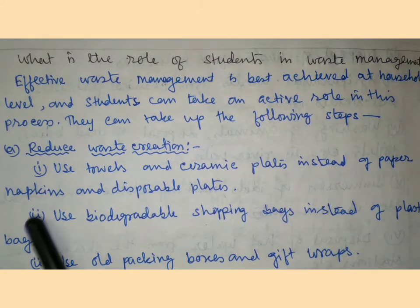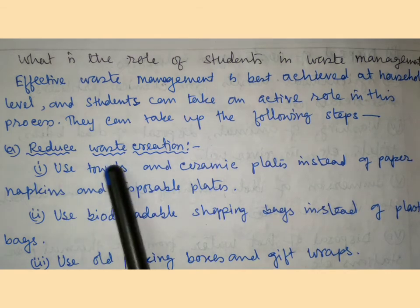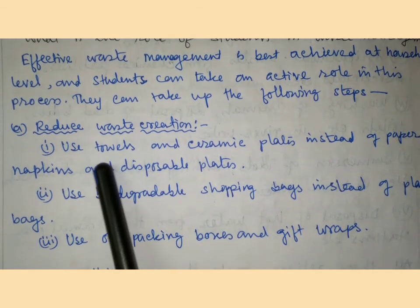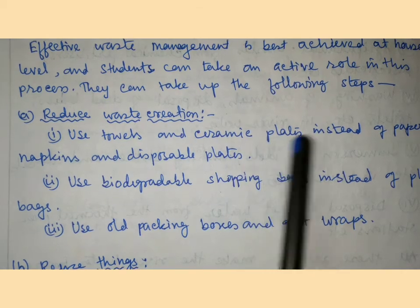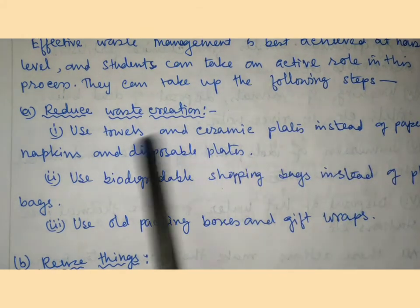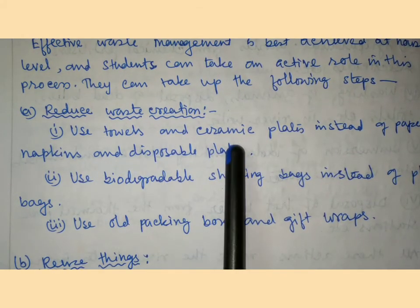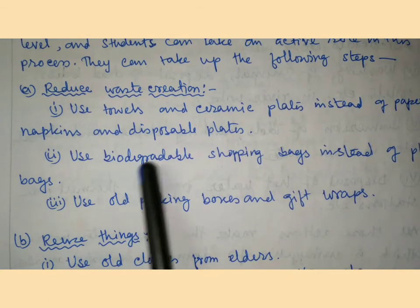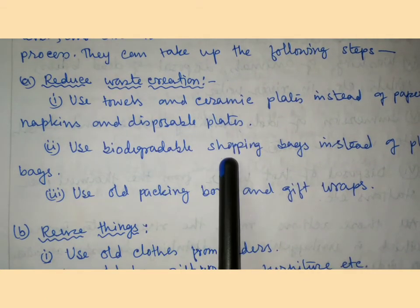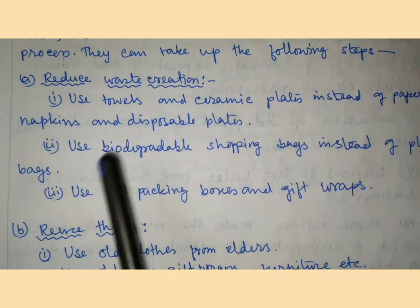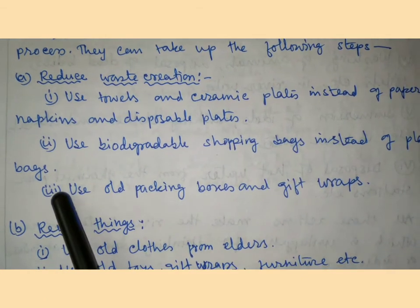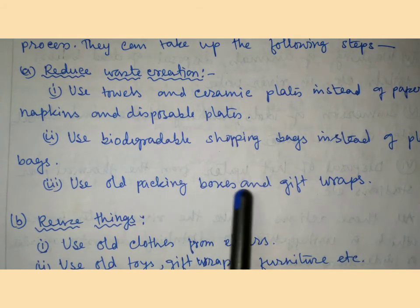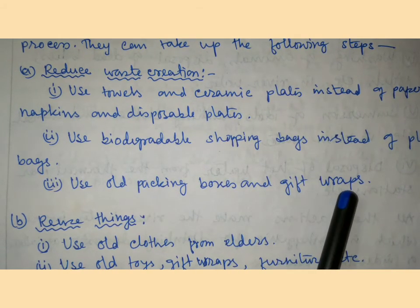Reduce waste creation: (1) use towels and ceramic plates instead of paper napkins and disposable plates, (2) use biodegradable shopping bags instead of plastic bags, and (3) reuse old packing boxes and gift wraps.